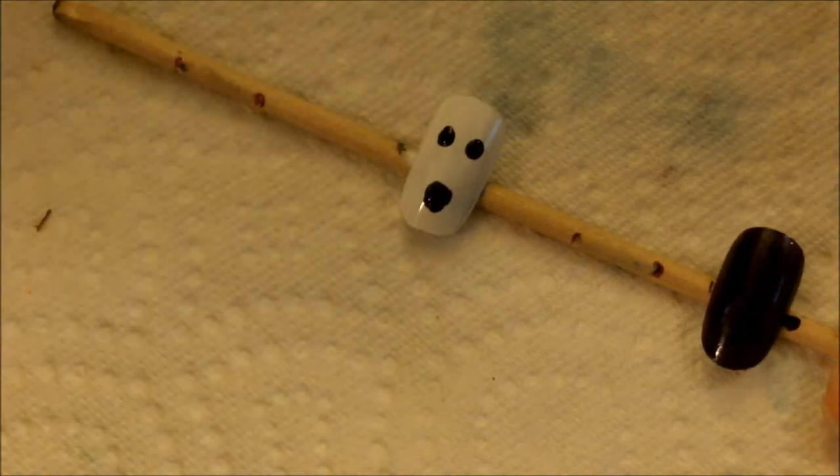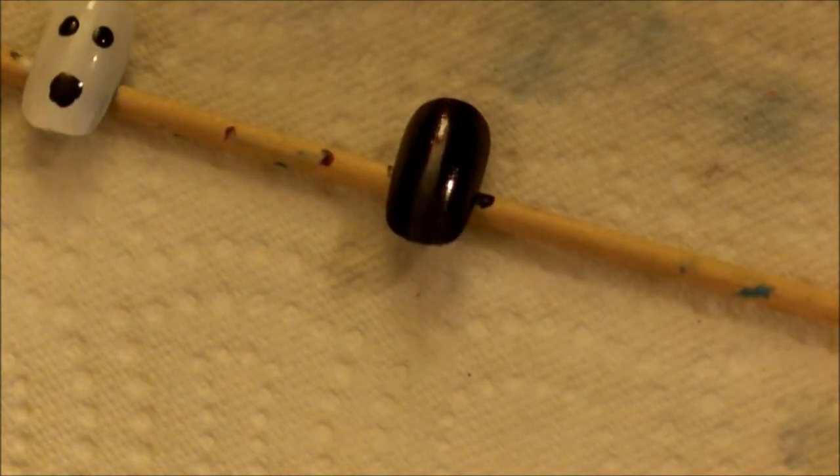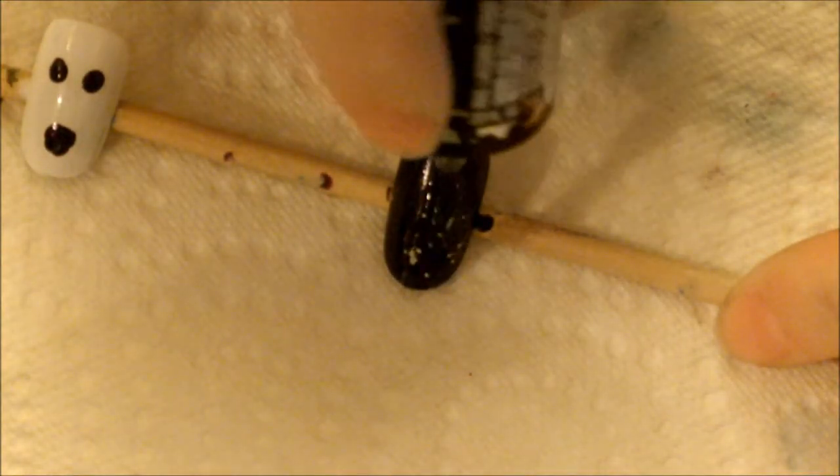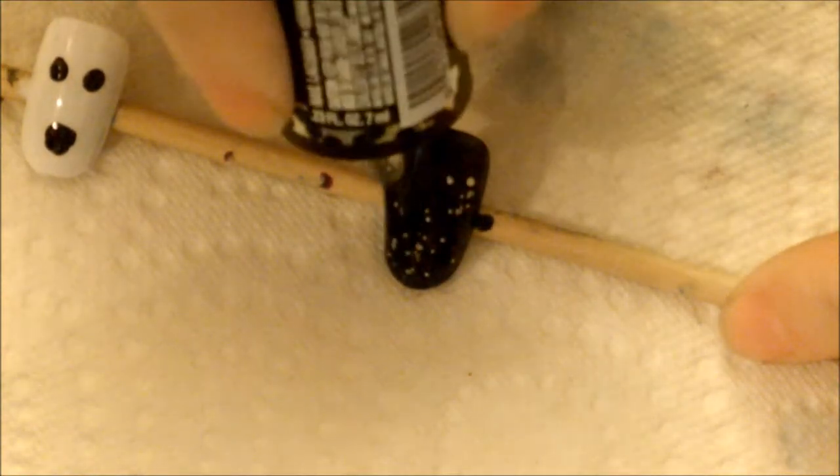I'm just going to take that polka dot polish and apply that over the black nail as our accent nails. You could also if you wanted paint 'boo' on your nail or something, but this is what I chose to do.